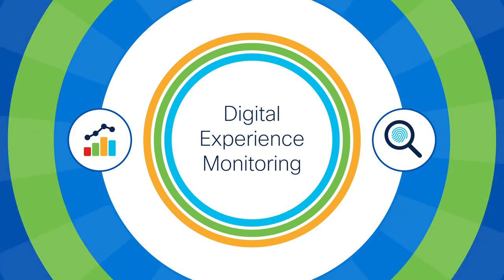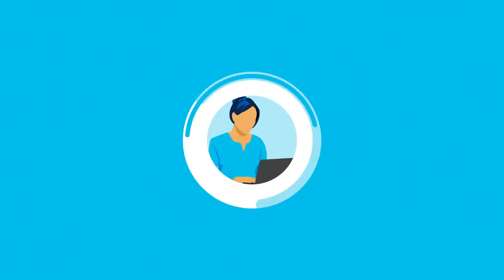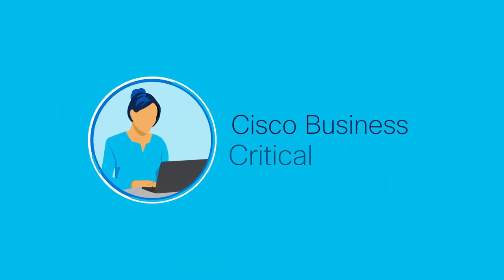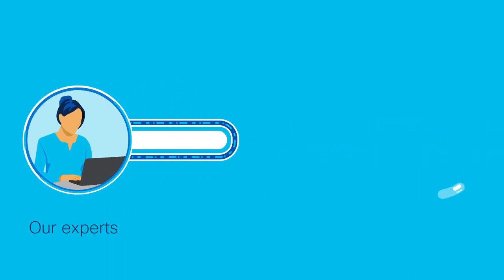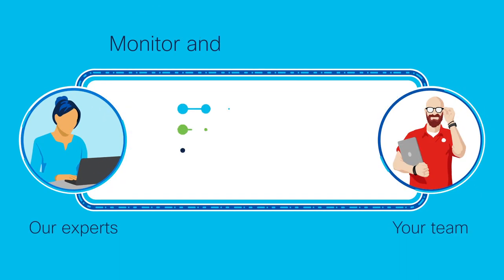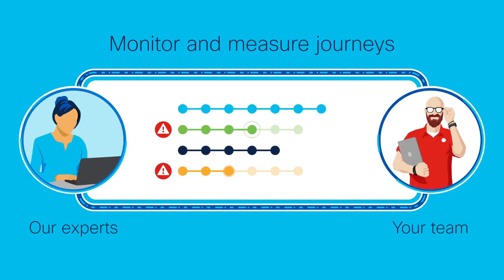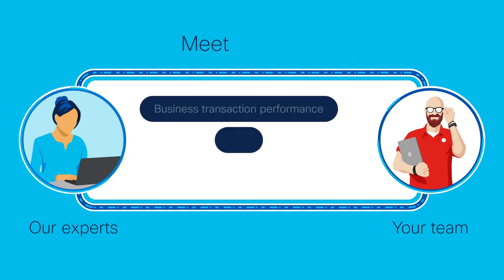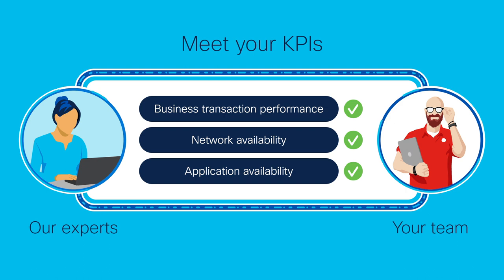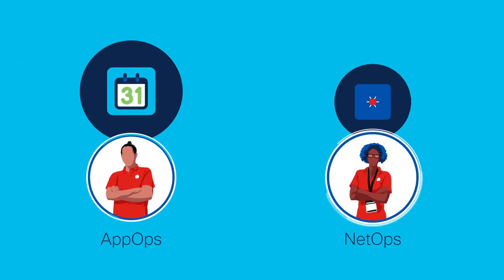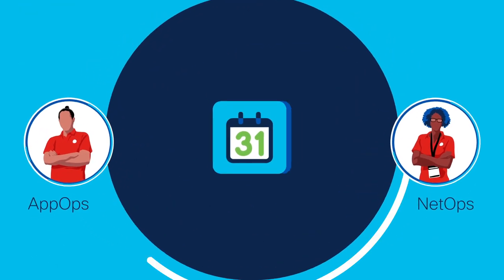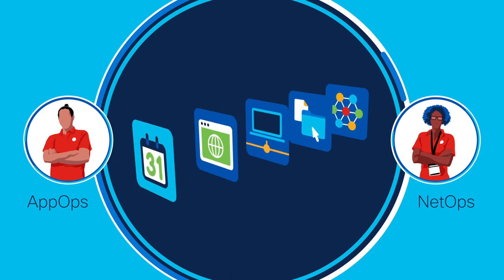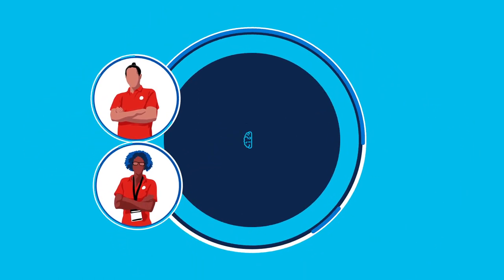How do you accelerate your adoption of digital experience monitoring? With Cisco Business Critical Services, we'll help you get up to speed, monitor and measure your users' journeys, detect underlying network issues, and meet your KPIs. Your App Ops and Net Ops teams will gain a shared point of view, all the way down to the browser, device, OS, location, and more.